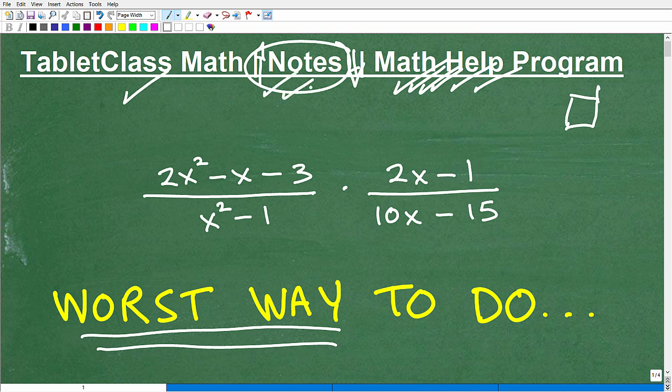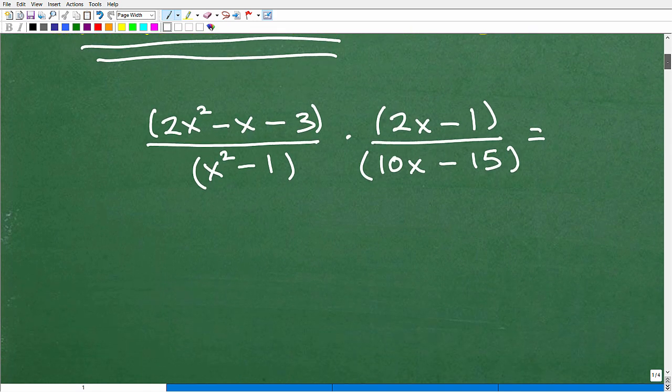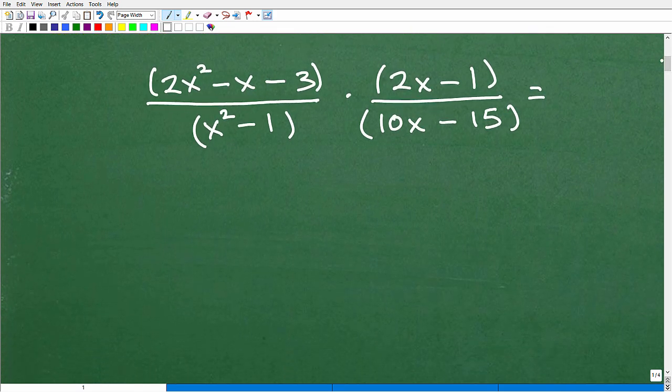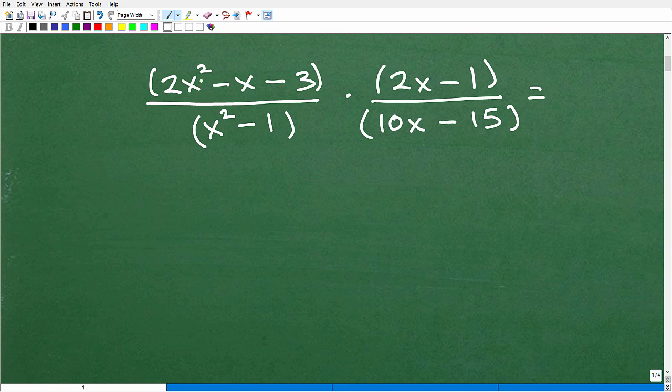So you have something to study from. Those would include pre-algebra, algebra 1, geometry, algebra 2, and trigonometry. You can find links to those notes in the description of this video as well. All right, so let's talk about this problem here and what you don't want to do. So here's the problem. And what we're dealing with is what we call rational expressions. They're basically a bunch of polynomials. They're fractions that involve variables.